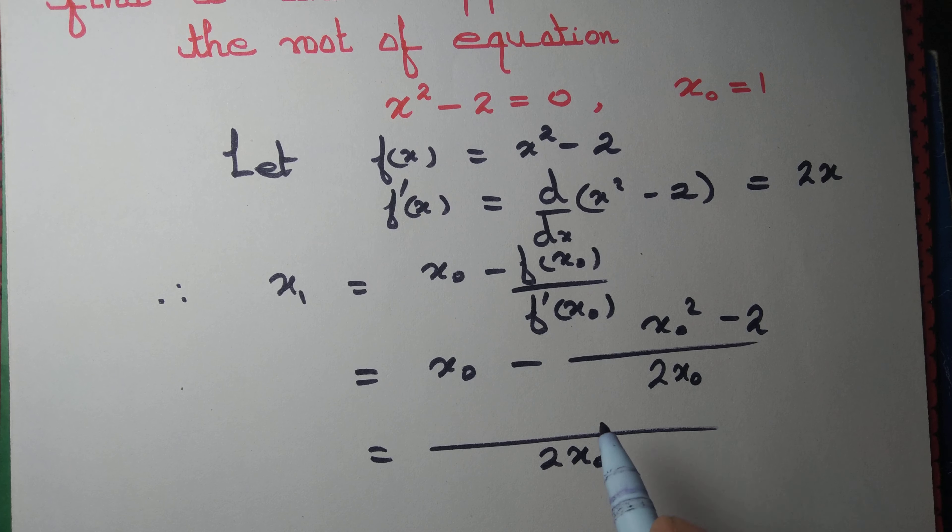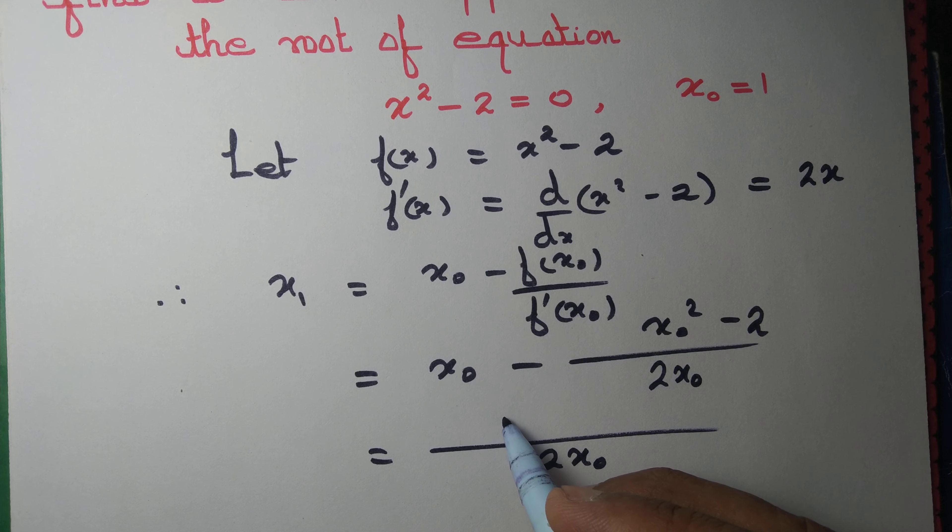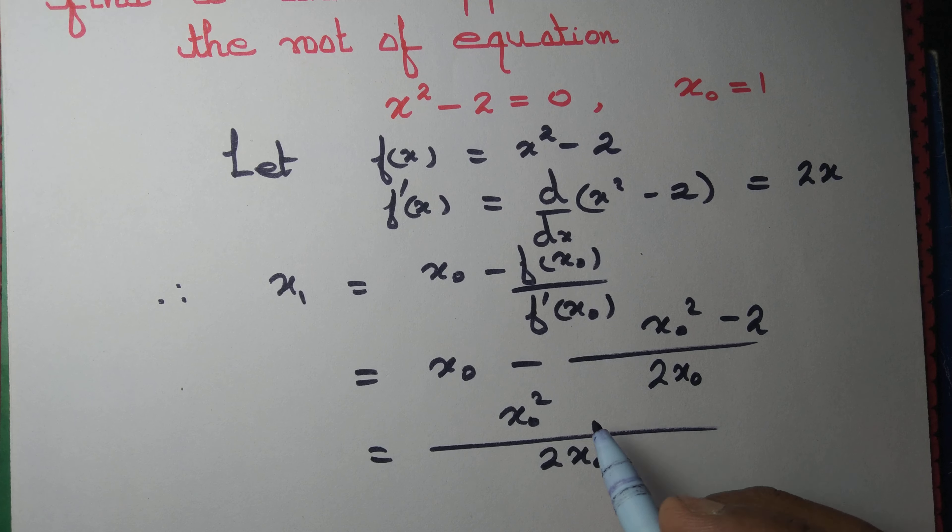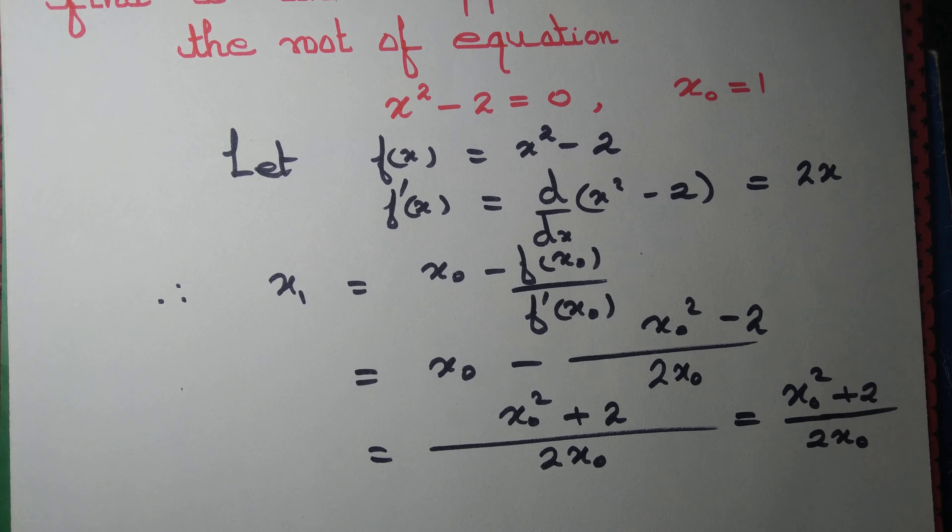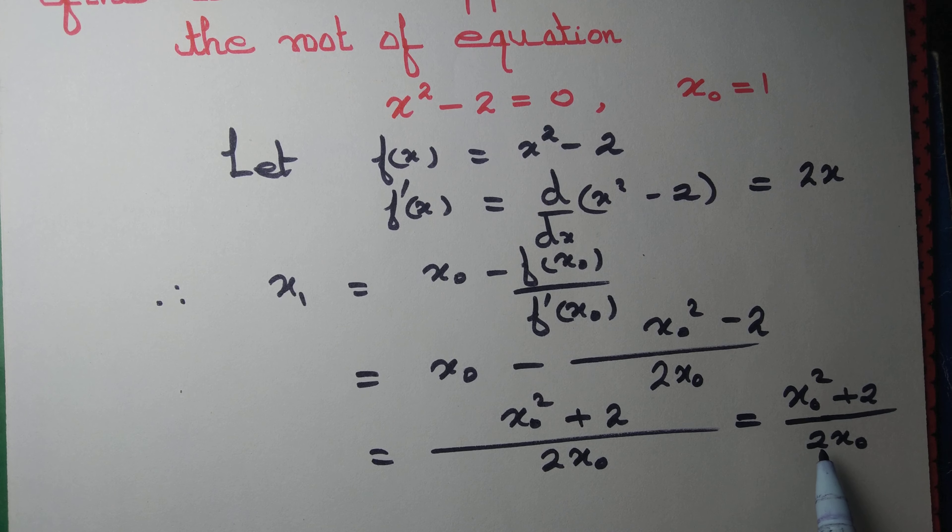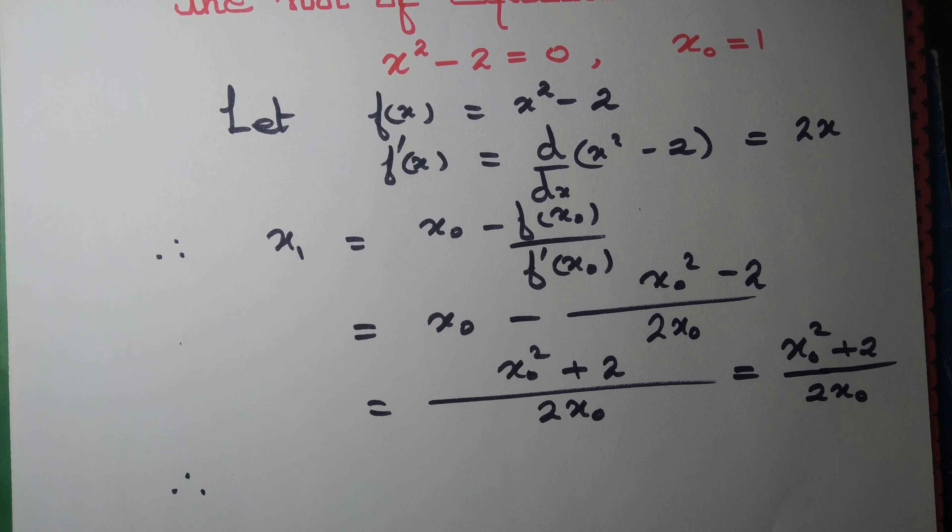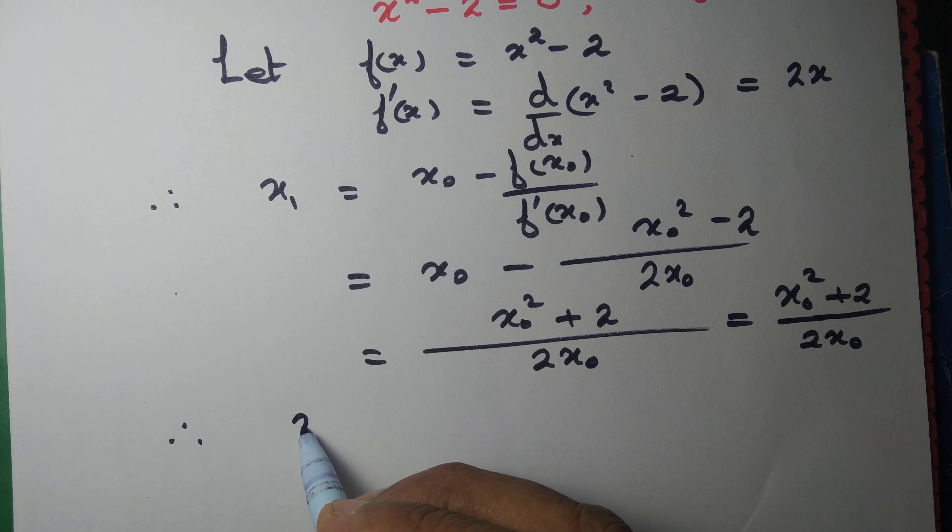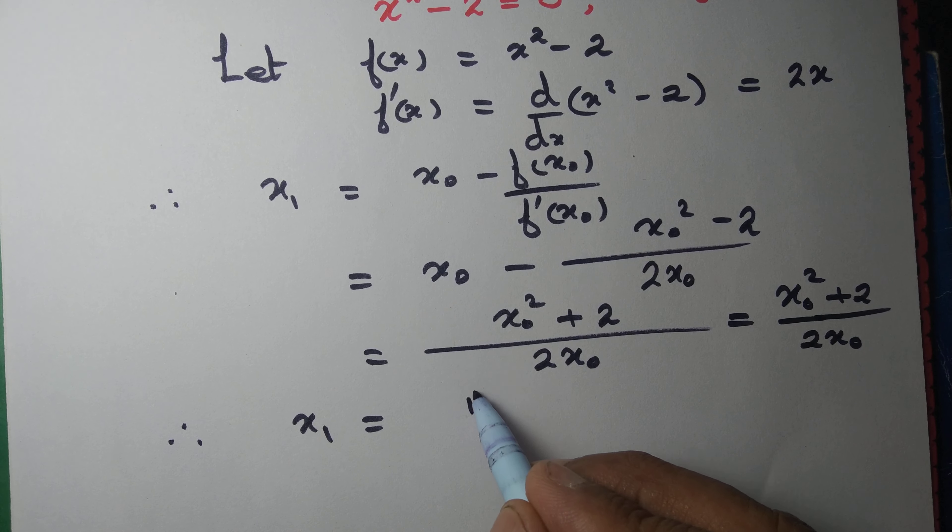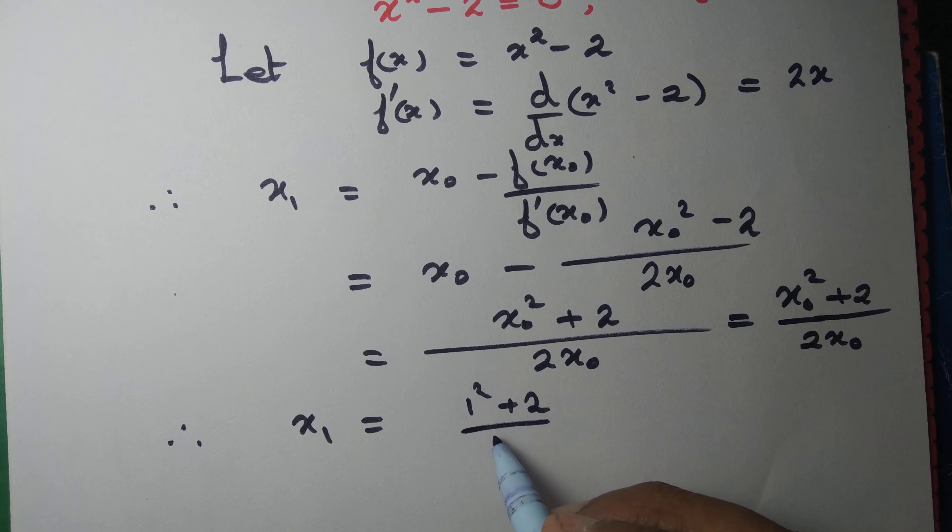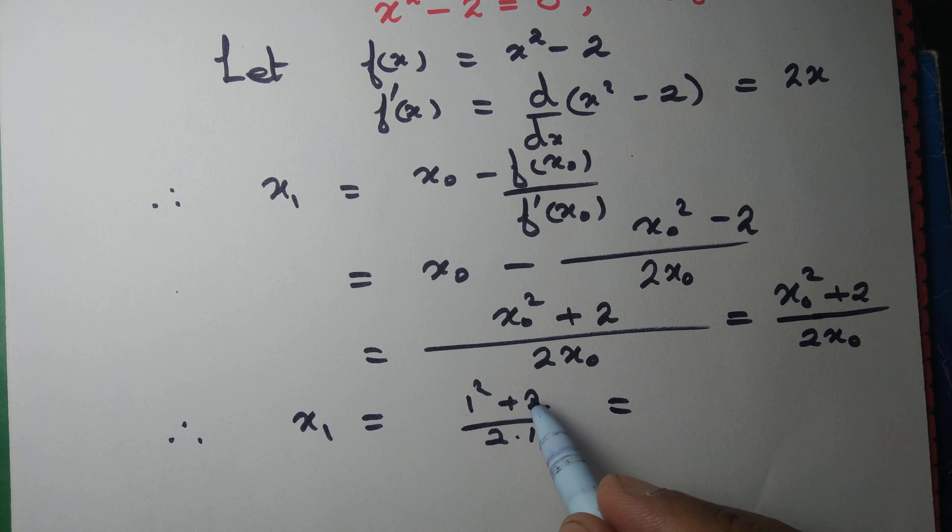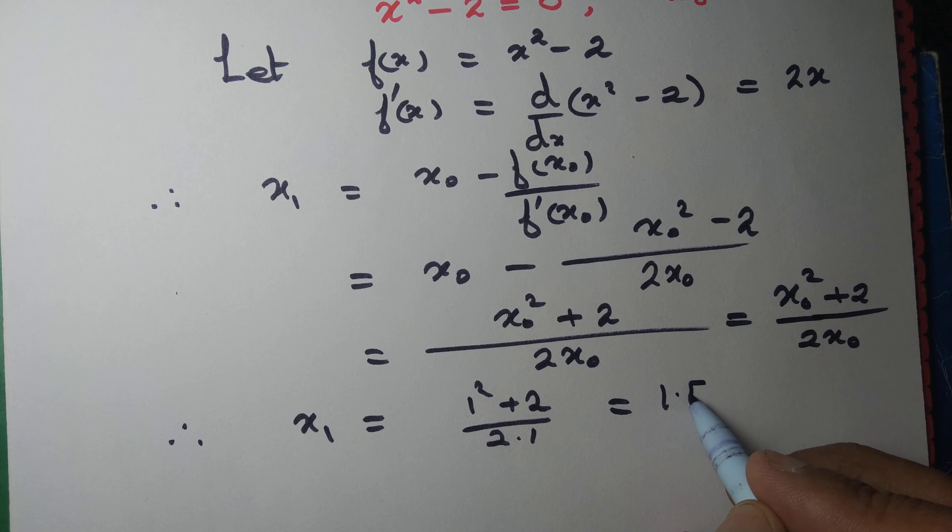That equals (2x₀² - x₀² + 2)/(2x₀) = (x₀² + 2)/(2x₀). Now we are given x₀ = 1, therefore x₁ = (1² + 2)/(2 × 1) = 3/2 = 1.5.